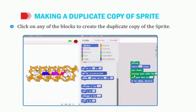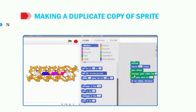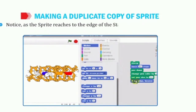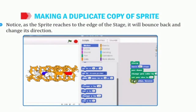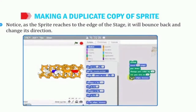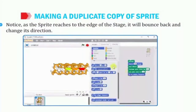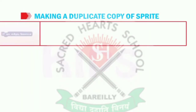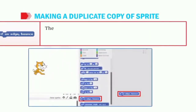Now click on any block to create the duplicate copy of the sprite. As soon as we click on the block, we will see the duplicate copy of the sprite being created. Notice, as the sprite reaches the edge of the stage, it will bounce back and change its direction. The command used here is 'if on edge, bounce.'